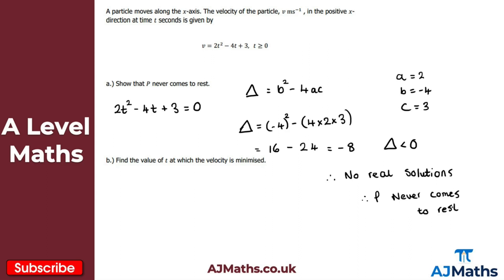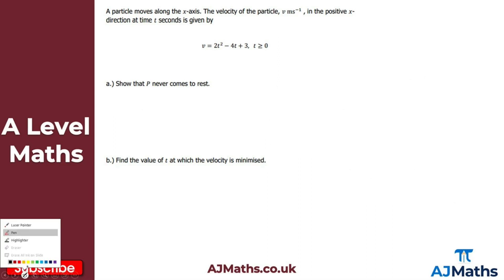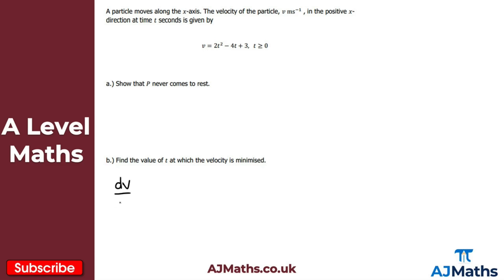That's the solution to part a — thinking a little outside the box. If p comes to rest then v equals zero, and we showed there are no real solutions. For part b, we're asked to find the value of t at which the velocity is minimized, which is similar to the previous question. I need dv/dt equals zero. This can only be a minimum since the quadratic is positive — it has a u-shape.